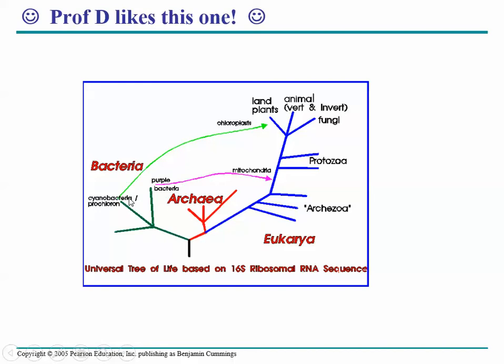Chloroplasts even have their own DNA. The diagram also shows that somewhere along evolutionary history, a kind of purple bacteria were captured by the ancestor of modern eukaryotic cells, and these became the mitochondria — the powerhouse. That's what I like about this diagram.